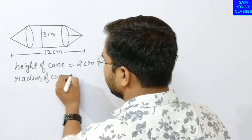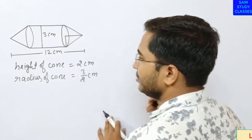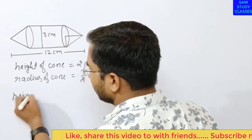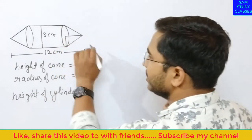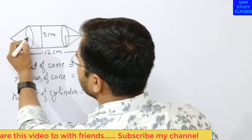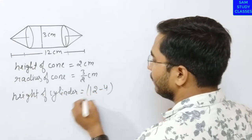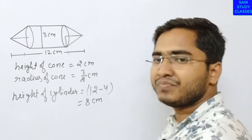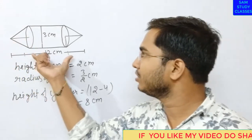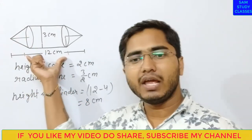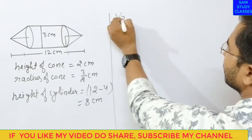Radius of cone is equal to 3/2 cm. Because the diameter is 3 cm, so radius is 3/2. Height of the cylindrical part: height of cylinder equals 12 minus 4, which is 8 cm. So from the given values, the cylindrical height is 8 cm.